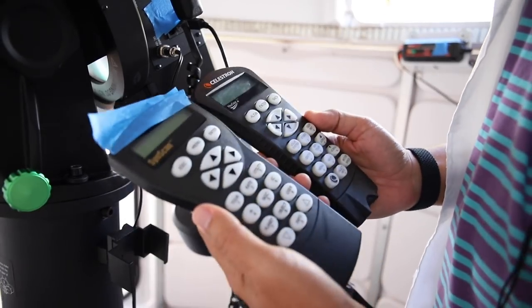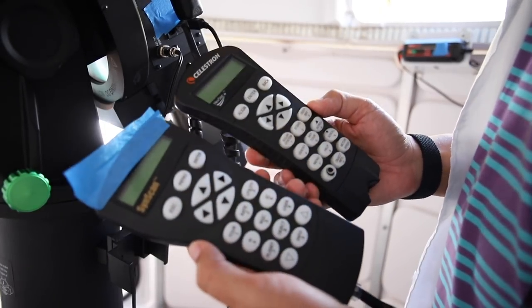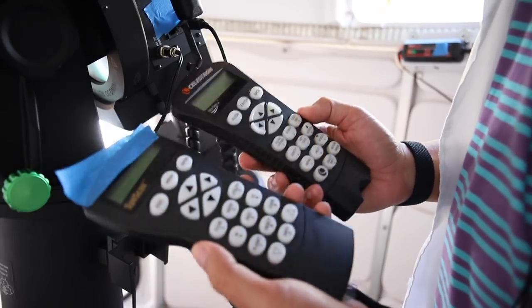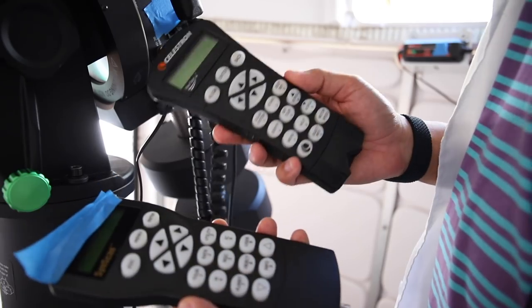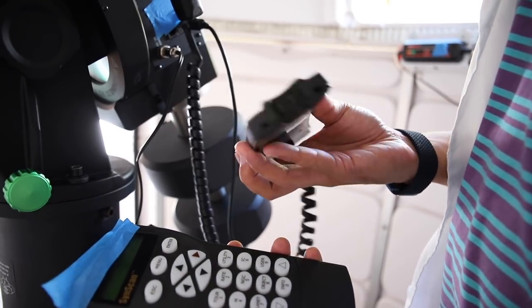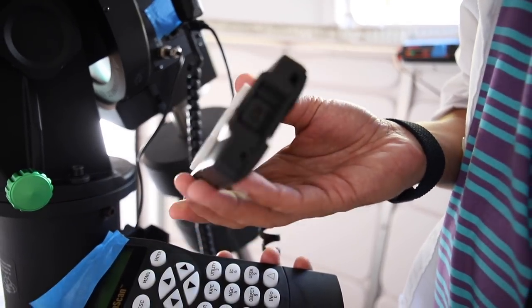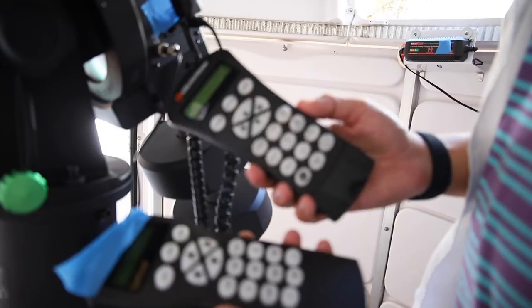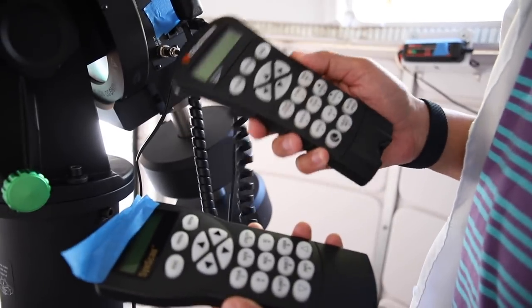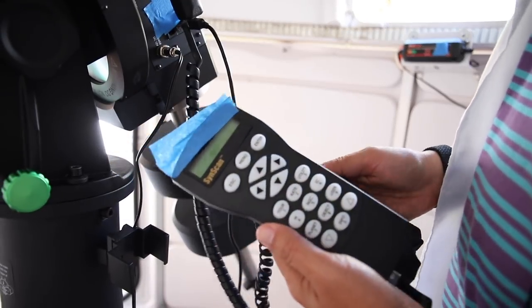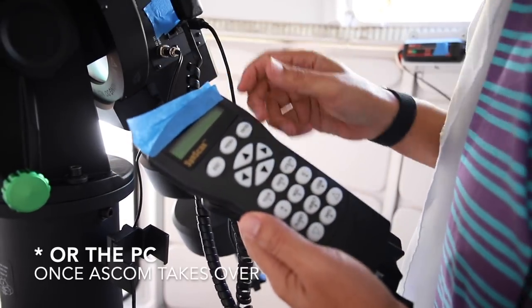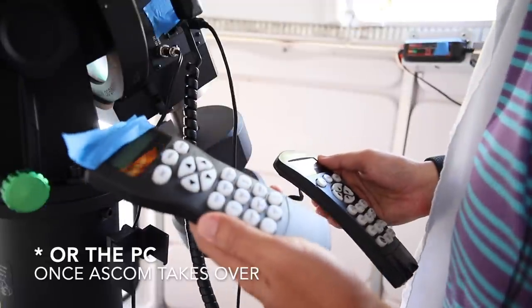So the Sky Watcher hand controller is SynScan and the Celestron is NexStar. Depending on your mount, really, a lot of the brains happens in the hand control. The Celestron one I had to have this plugged in all the time, even though I'd plug the PC port to the PC and control it via computer. It still contained a lot of the brains in here. I think that's different for more premium mounts though. A lot of the brains do actually happen in the mount, so you can get rid of the hand controller all together if you want to.